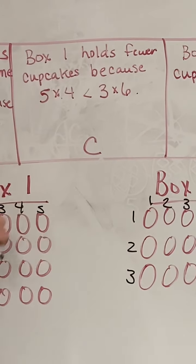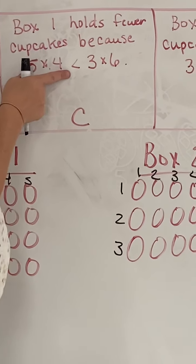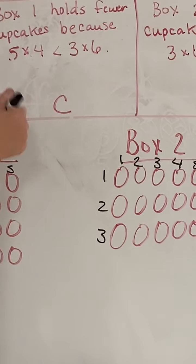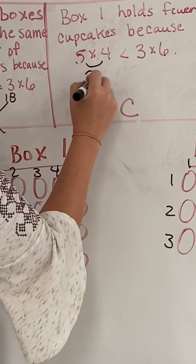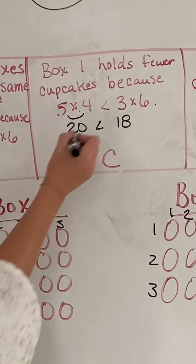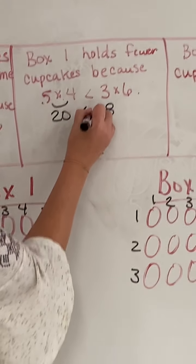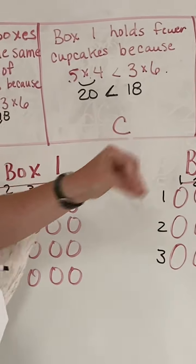Box one holds fewer cupcakes because 5×4 is less than 3×6. Well, again, we can add 5×4 is 20 and 3×6 is 18. And if you remember back in second grade, remember that greater than and less than? An easy way to remember it is remember the alligator bites the bigger amount.